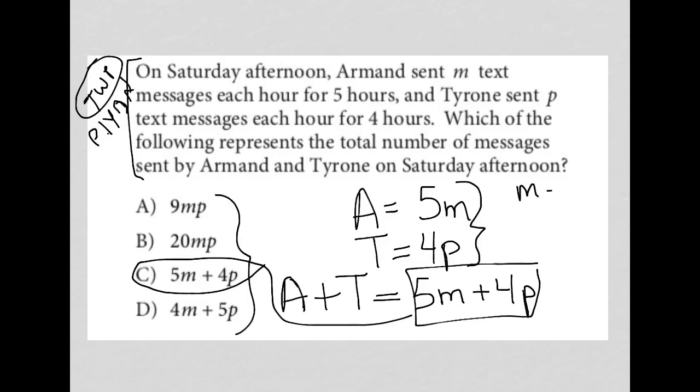if I said M was 2 and I knew that Armand sent two text messages each hour for five hours, I would know that Armand sent a total of 10 text messages. And then if I said that P was equal to, let's say, 3,